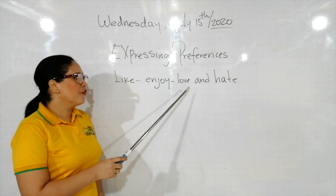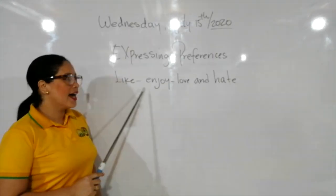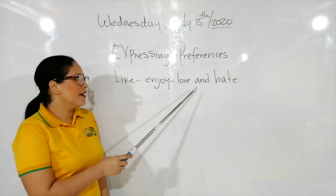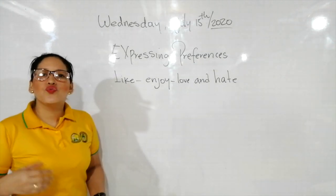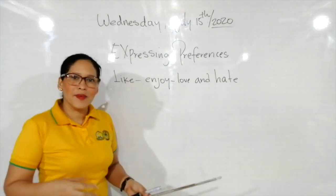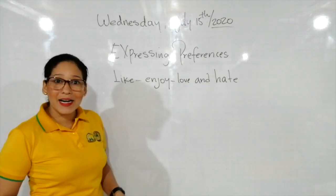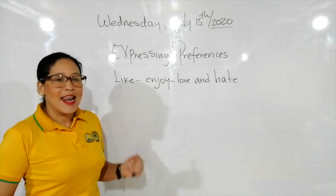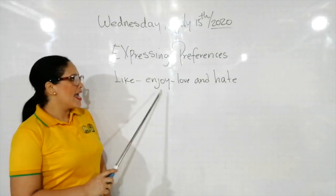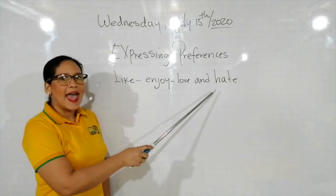Entonces los verbos like, enjoy, love and hate, que significa gustar, disfrutar, encantar, amar y odiar, son usados para expresar lo que me gusta y lo que no me gusta. Vamos a repetir la pronunciación de estos verbos: like, enjoy, love, hate.